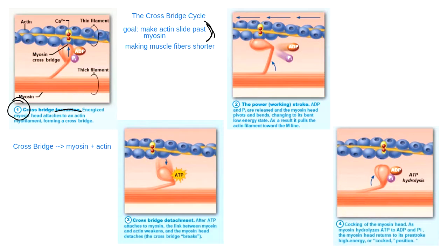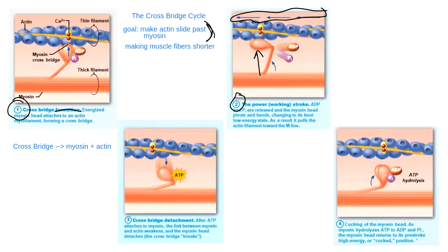Step two of the crossbridge cycle is called the power stroke. The power stroke is when I actually see actin moving — the little arrows in the picture show actin actually sliding. The power stroke is the stage when my myosin protein changes its shape: it bends over, and when it's bending, it's pulling actin along, making the muscle cell shorter.